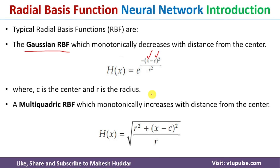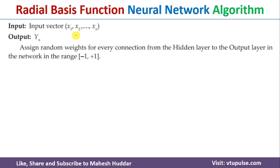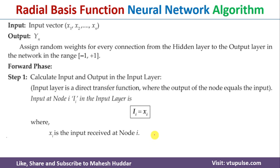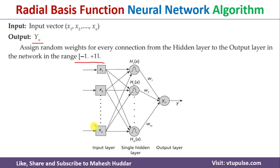Now we will understand the algorithm of radial basis function in artificial neural network. The input to a radial basis function contains a vector of inputs x1, x2, ... xn, and the output is yn. The network has an input layer, output layer, and a single hidden layer. From each hidden layer neuron to the output layer neuron we assign some weights, which should be in the range of minus one to plus one — randomly assigned at the initial stage. In the second step, the forward phase, we calculate the input and output at the input layer.